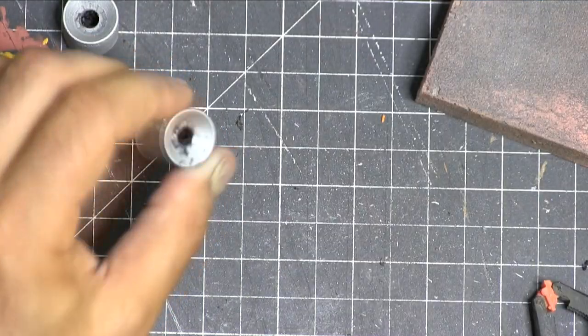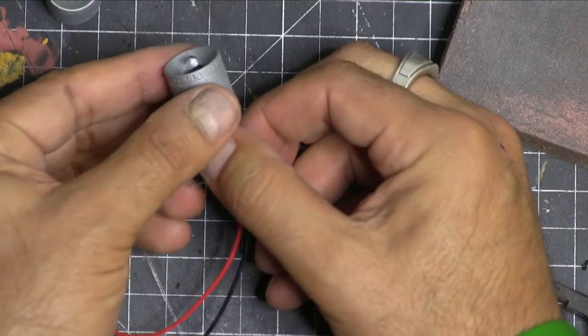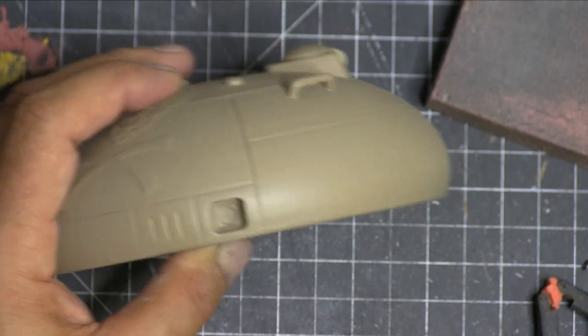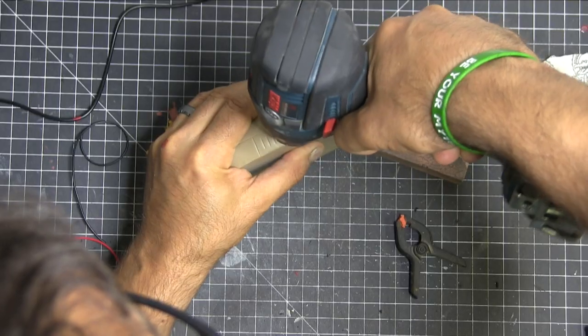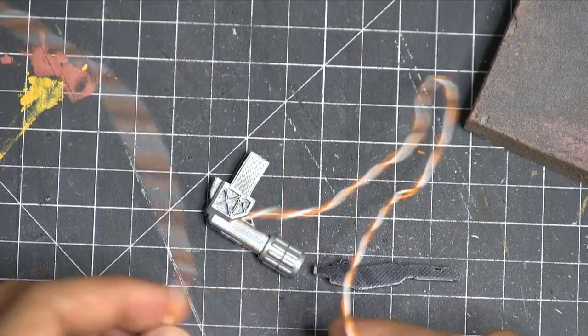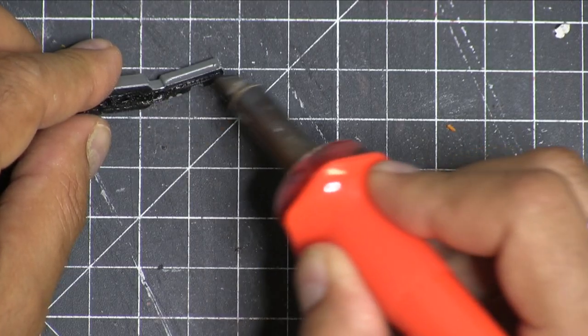Now the drill bit I'm using is for plastic. I'm going to have links to all these things. It doesn't cut or grab onto the plastic. And I'm just drilling these holes in where we're going to be putting LEDs.